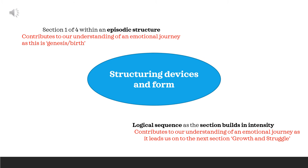Moving on to structuring devices and form: it's important to remember that this piece has an episodic structure and this is Section 1. Episodic means it doesn't follow a narrative storyline, but instead has different sections with an overarching theme — here, the idea of an emotional journey or order and chaos. Each section is part of that journey, and this first section is all about Genesis and birth. There is also a logical sequence within the work: this section builds in intensity, which contributes to our understanding of it as an emotional journey, and leads us into the next section, Growth and Struggle.